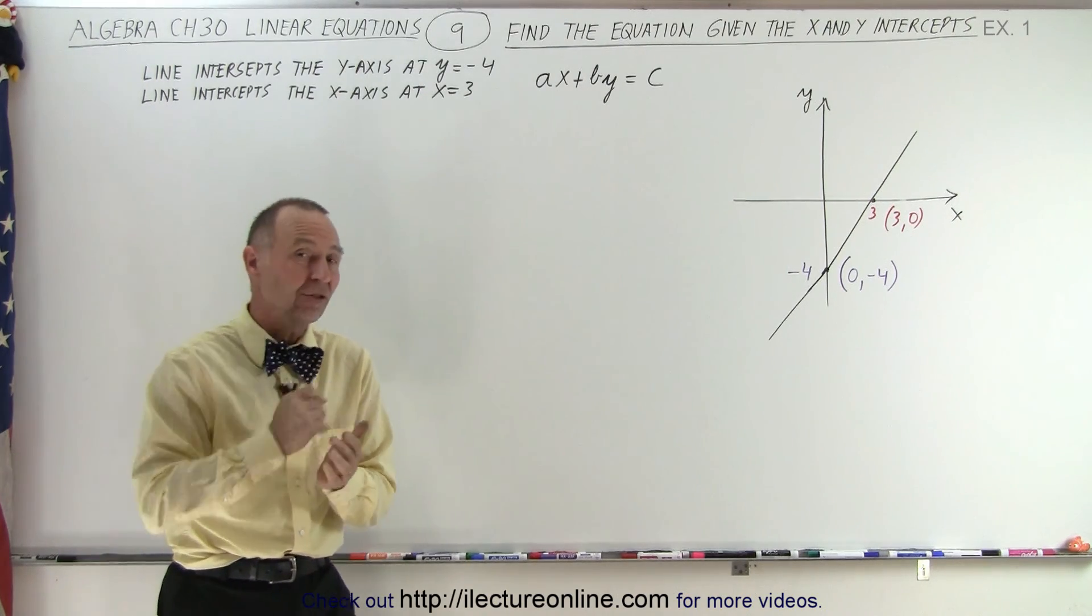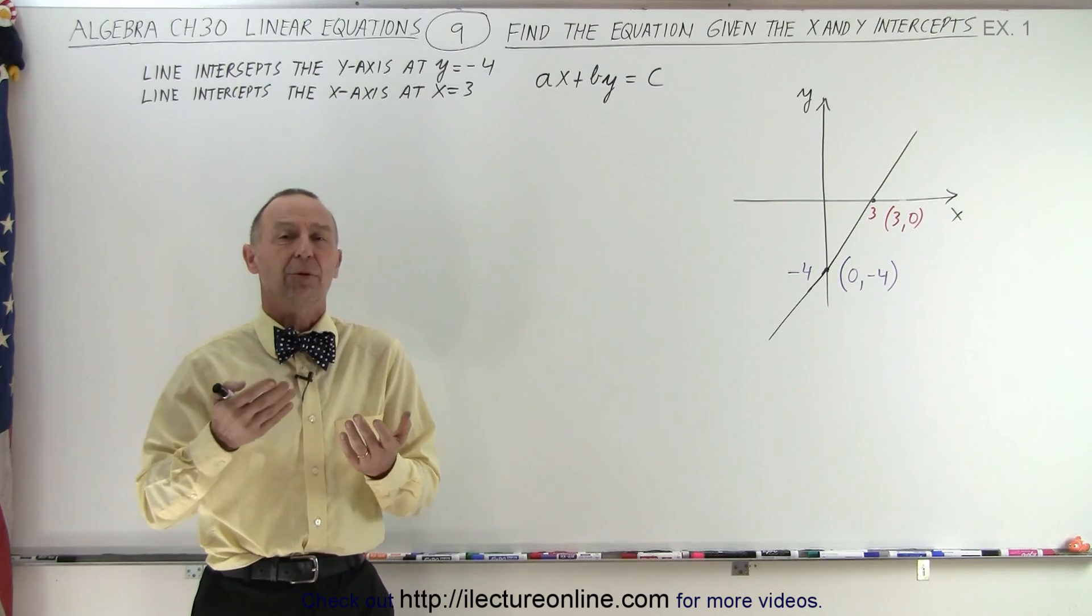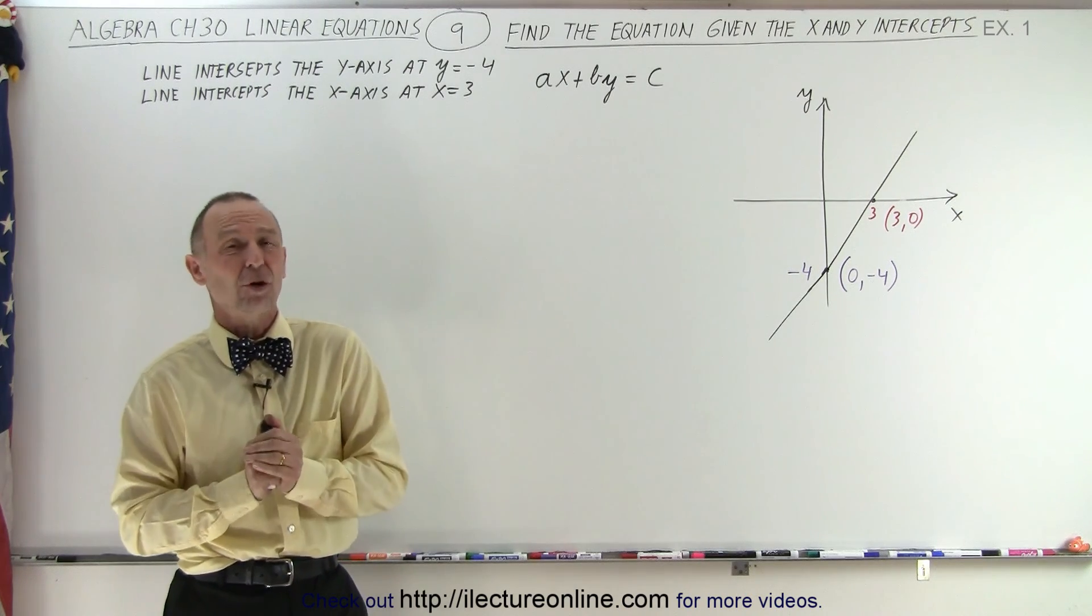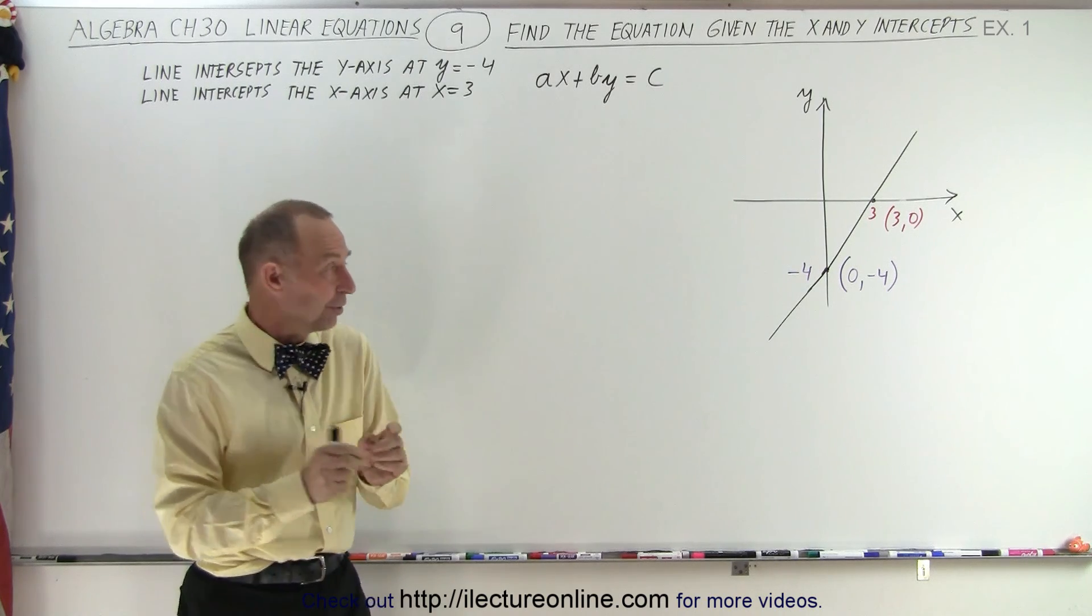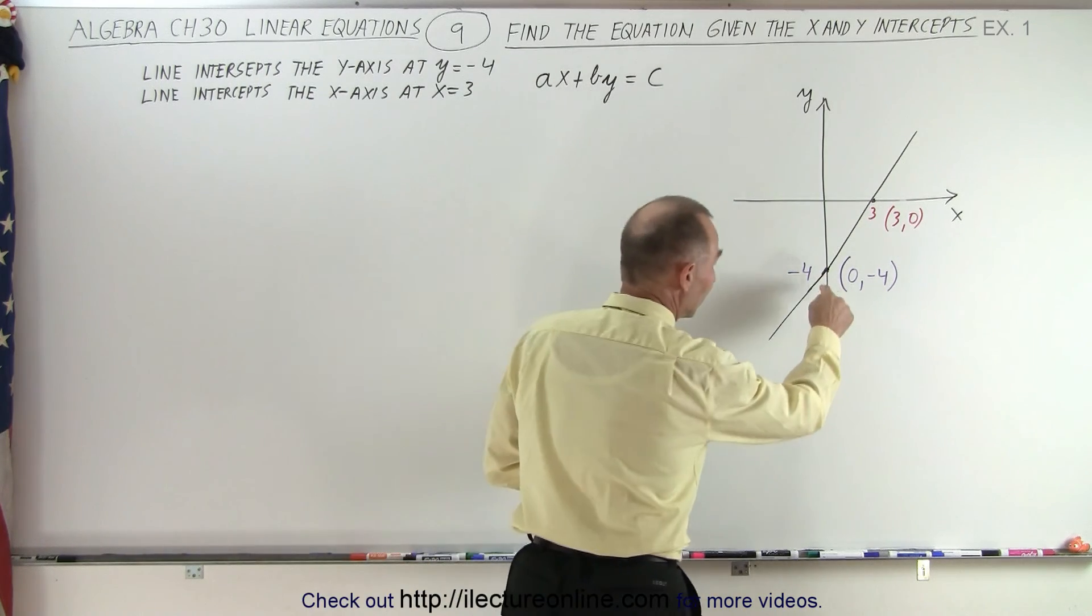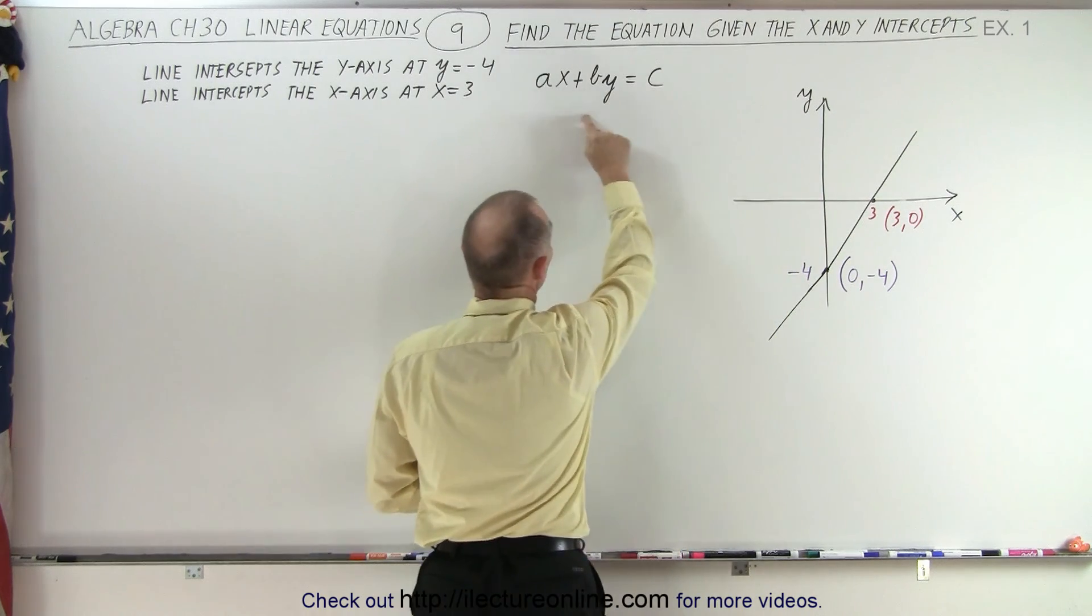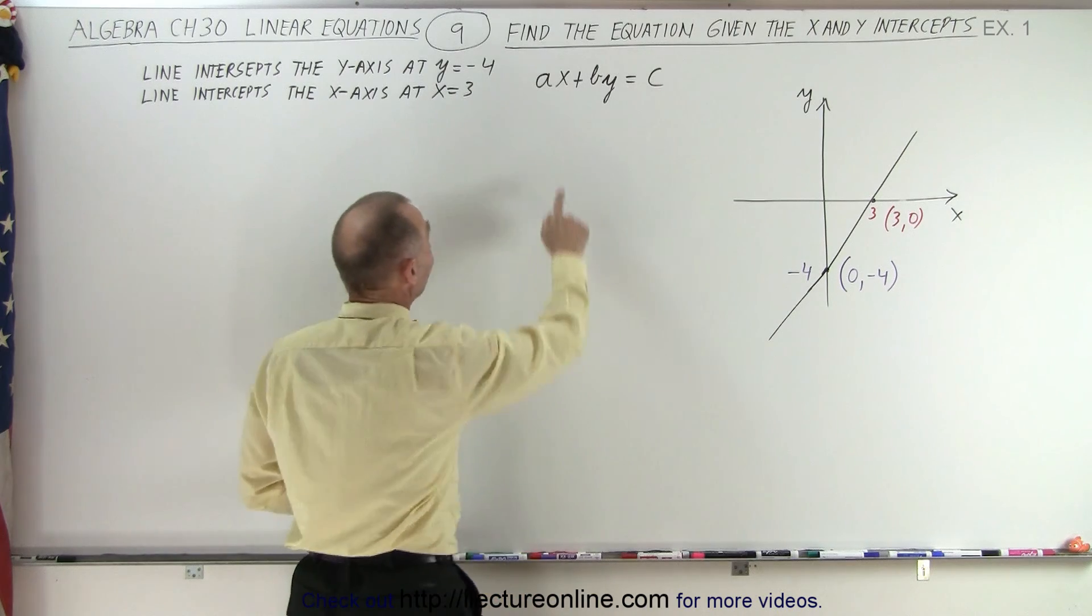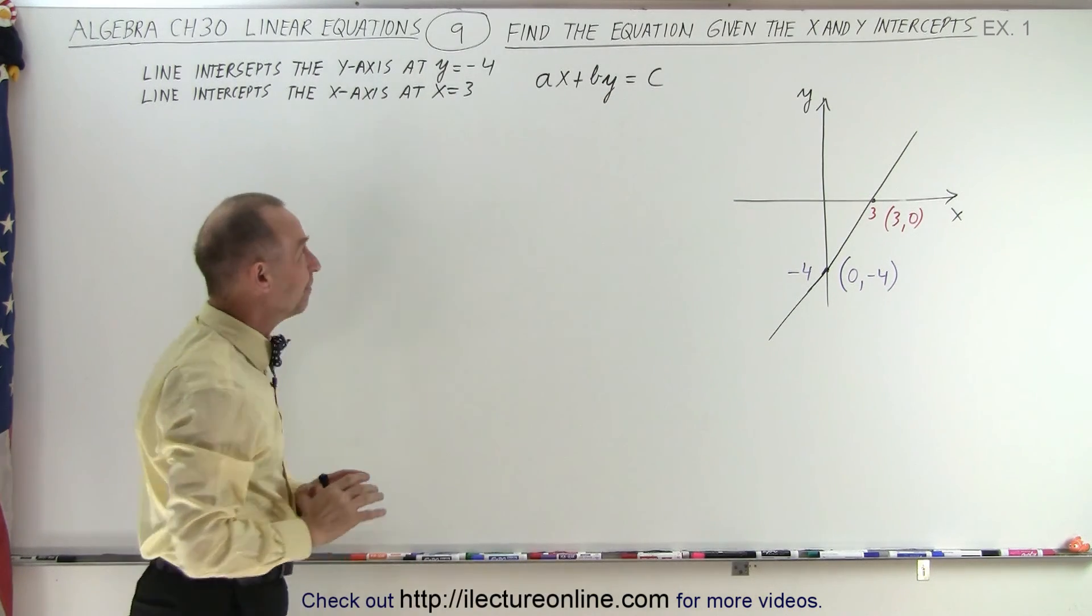Now, later on in this series, we're going to learn a very special technique, the slope-intercept form, which actually makes it easier to do so, but at least we should learn this technique here. If we're just given the x and y-intercept, we should be able to find the general form of the equation. In other words, we should be able to find a, b, and c. Let's see how that's done.